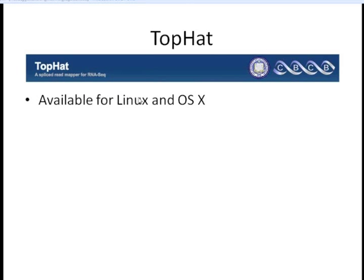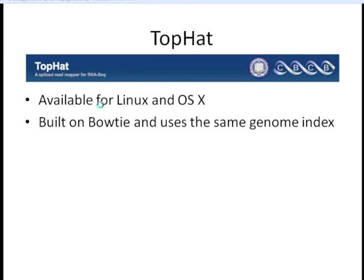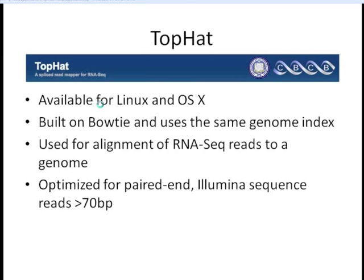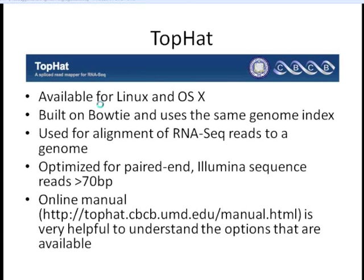The next program for alignment of next-generation sequencing is TopHat. This is available only for Linux and OSX operating systems. It's built on Bowtie and uses the same genome index. It's used for aligning RNA-seq reads to the genome, and has been optimized for paired-end reads greater than 70 base pairs. A link to the manual with examples and all options is available.